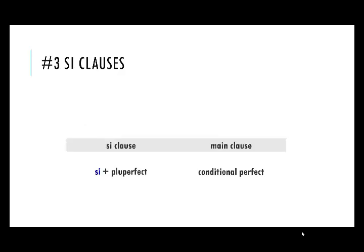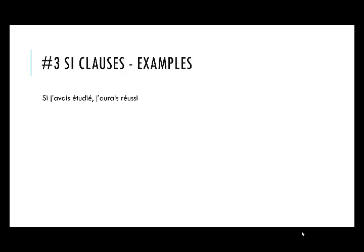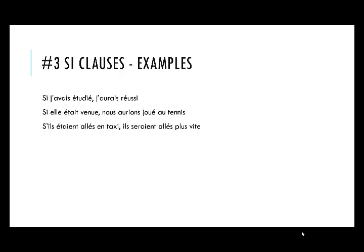Number three si clauses: if the si clause is in the pluperfect, the main clause will be in the conditional perfect. For example: 'Si j'avais étudié, j'aurais réussi' — if I had studied, I would have succeeded. 'Si elle était venue, nous aurions joué au tennis' — if she had come, we would have played tennis. 'S'ils étaient allés en taxi, ils seraient allés plus vite.' You can see with the auxiliaries: avait/aurait (imperfect and conditional), était/serait — the same pattern applies.